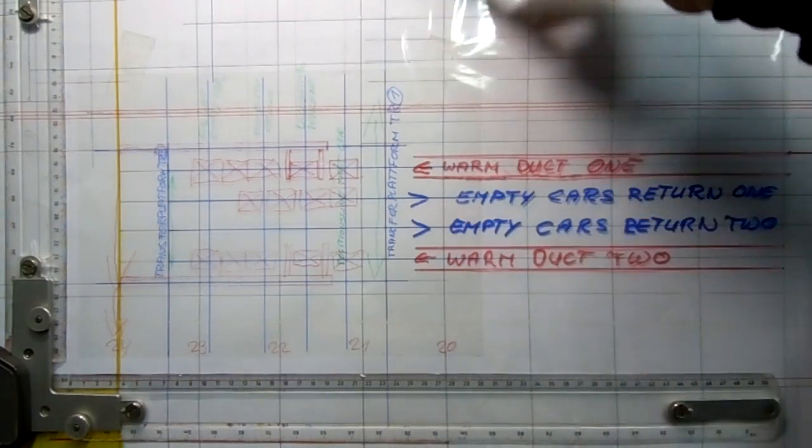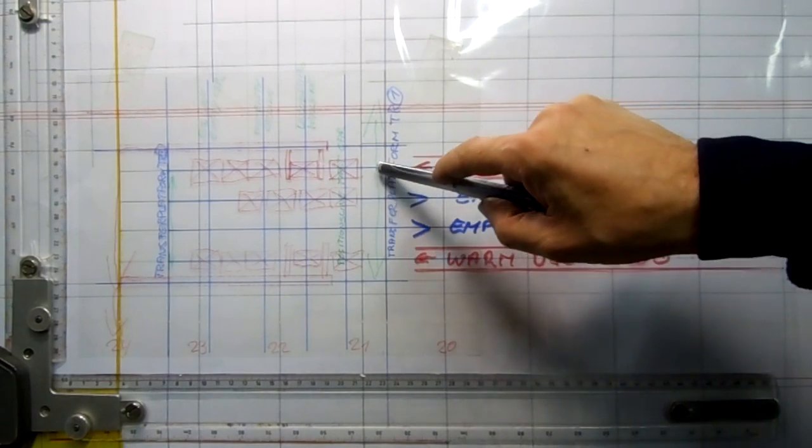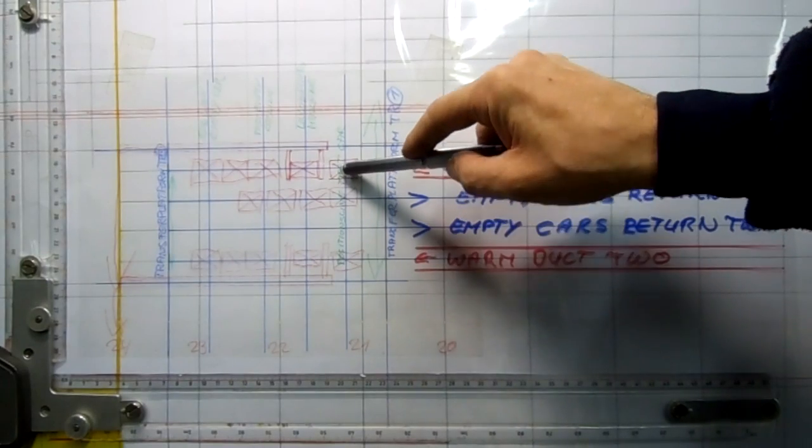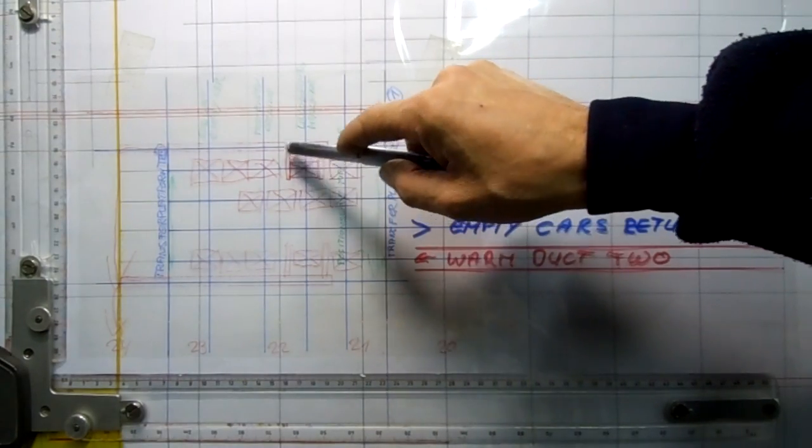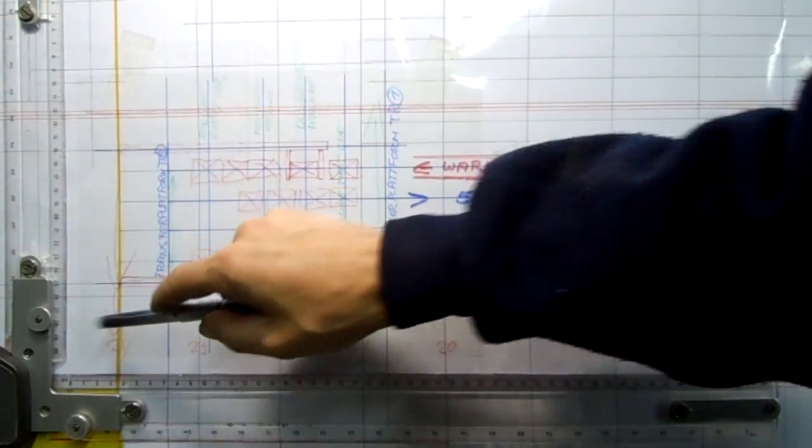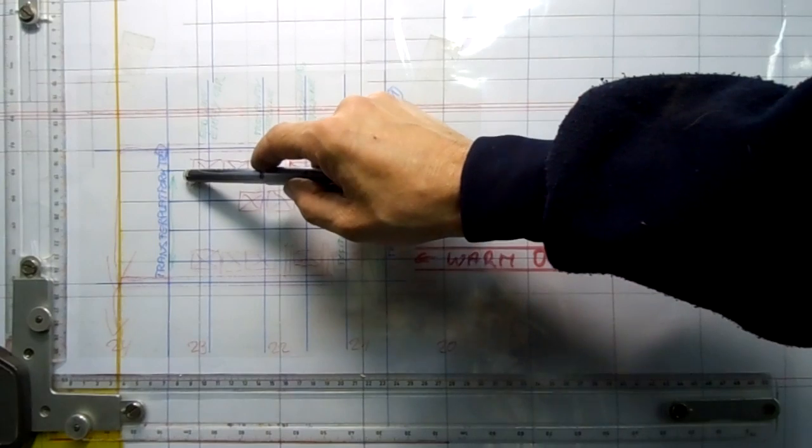This is our transfer platform. The car passes the transfer to this place and then gets moved into unloading machine one with the line to the kiln. The empty cars, three empty cars, are here.